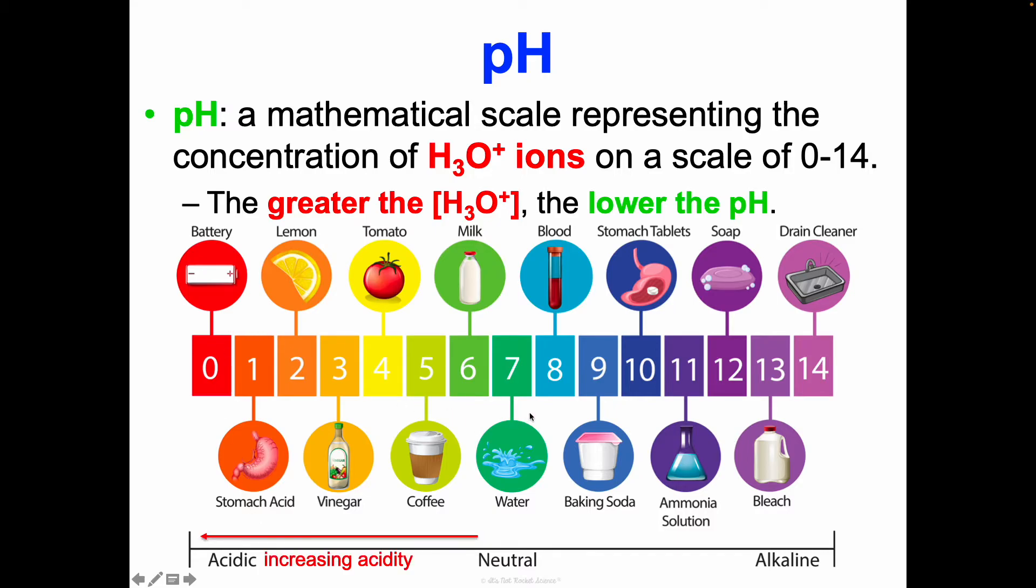As we move down the number of pH, that's increasing acidity. Battery and stomach acid, which are 0 and 1 on the pH scale, have the highest hydronium ion concentration. They're much higher than coffee. Drain cleaner and bleach have the least hydronium ion concentration because it's the inverse relationship. As they go up the scale, we're increasing in basicity or increasing in alkalinity.